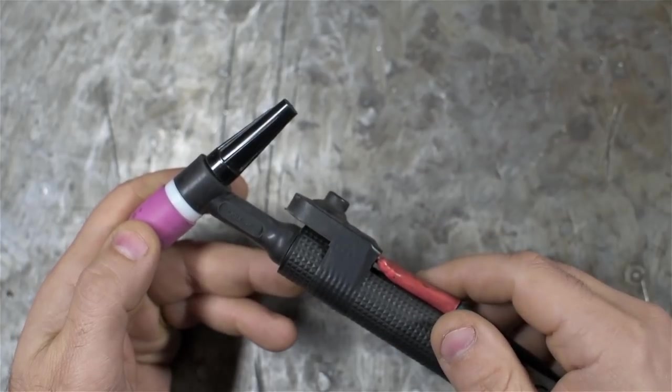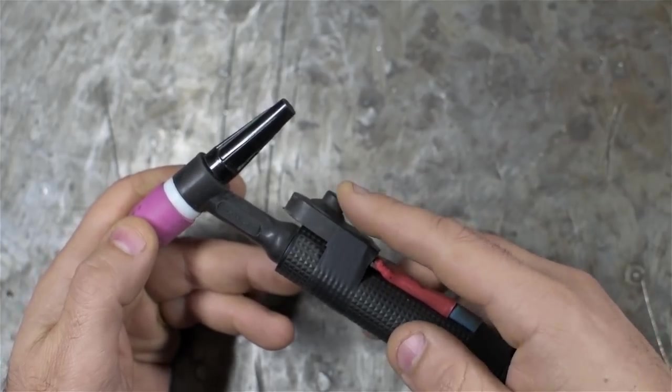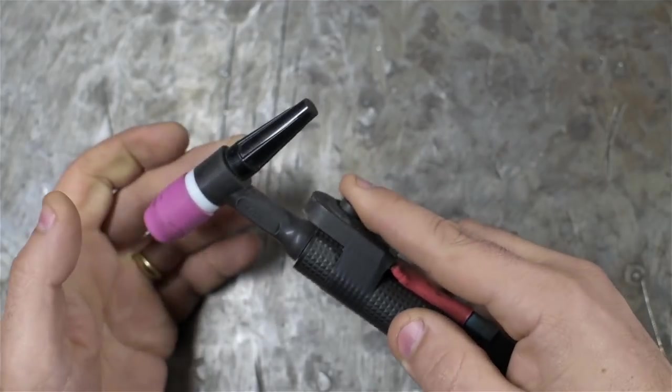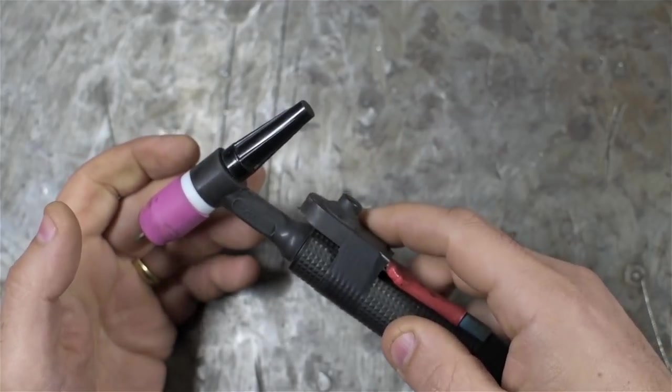In 2T, you only push the button once and let go to span the whole weld cycle. Like you're welding while the button's down and you're not welding when the button's not down. The point of all this is to give you more control with just a single button on your torch.